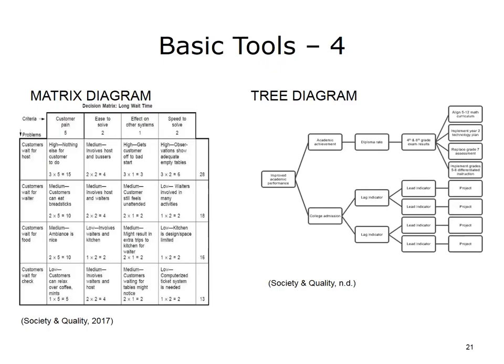The Priorities Matrix uses a series of planning tools built around the matrix chart. This matrix helps when there are more tasks than available resources, and management needs to prioritize based on data rather than emotion. A priorities matrix allows a group to systematically discuss, identify, and prioritize the criteria that have the most influence on the decision.